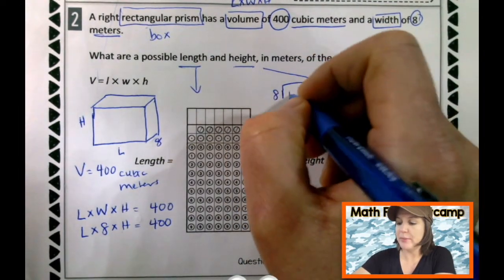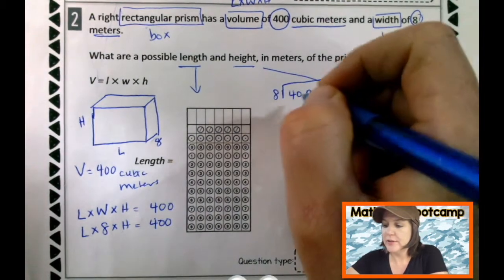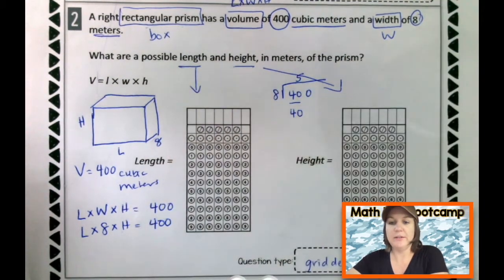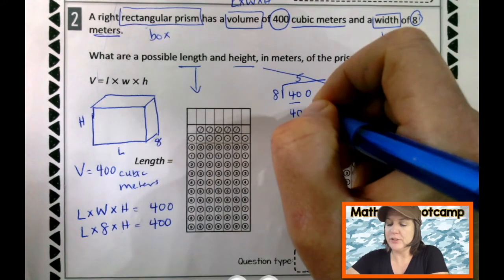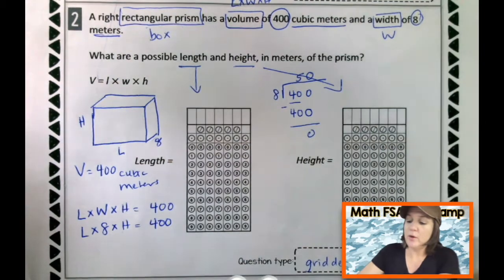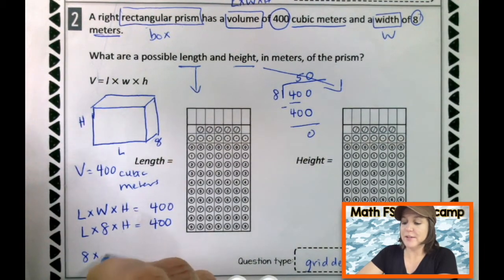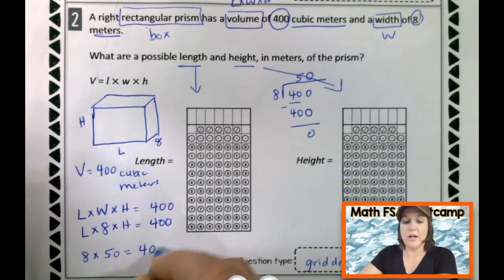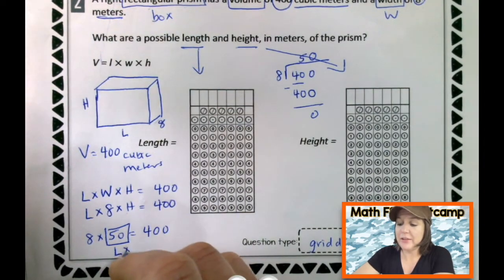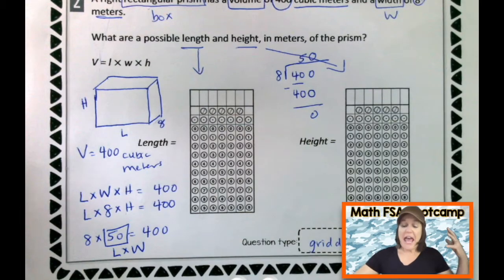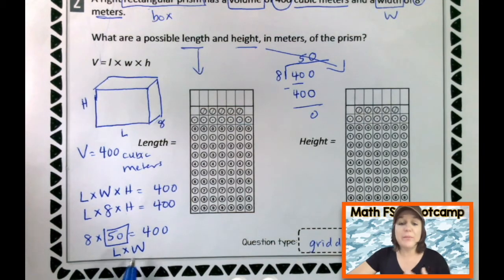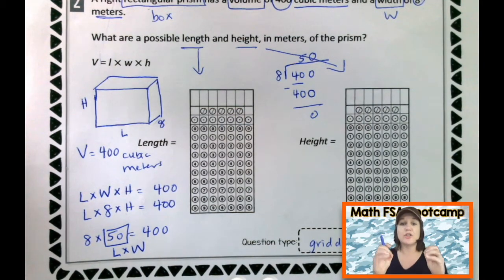So we know that if we can find the length and the height and multiply that by 8, we should get 400. But we kind of have to think backwards. So because we are multiplying here, we need to do the inverse operation. We need to divide 400 divided by 8 to see what is left right there. So to do that, do it over here, make sure I'm not going in my bubbles. So 8 goes into 40 5 times, which is 40, right? And I can do a 0 here and a 0 there. So 50 times subtract, we get 0.